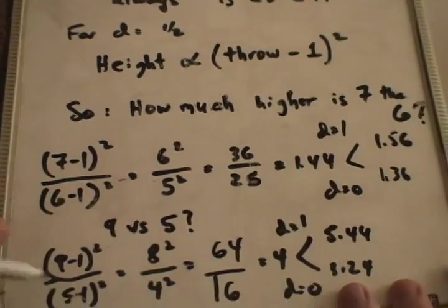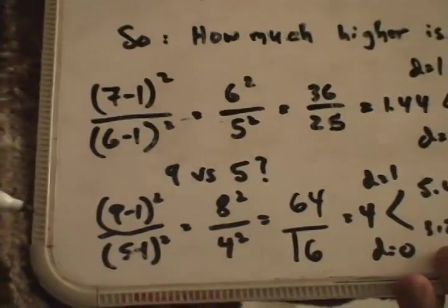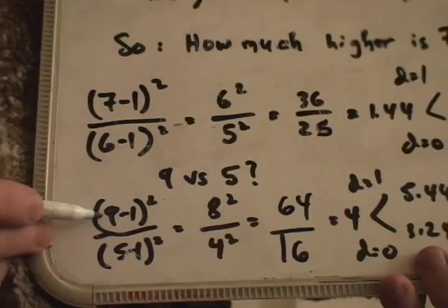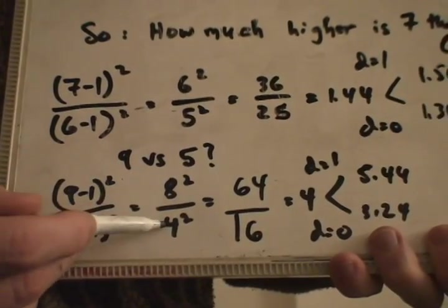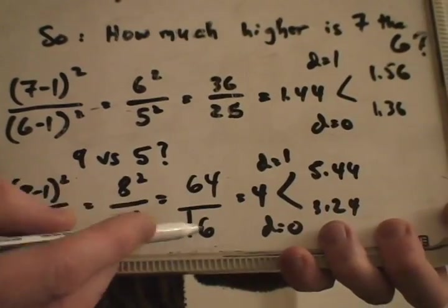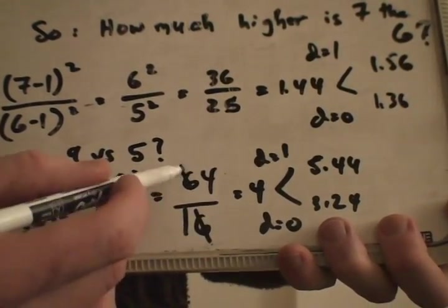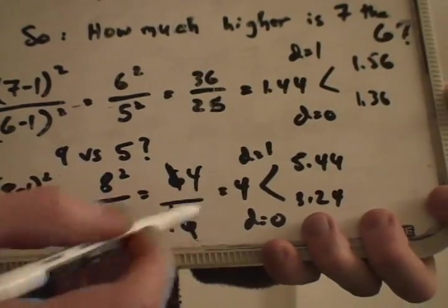How much higher is a 9 than a 5? Well, once again, for dwell of a half, (9-1)² over (5-1)² is 8² over 4², which is 64 over 16. You can just cancel and get the answer of 4.